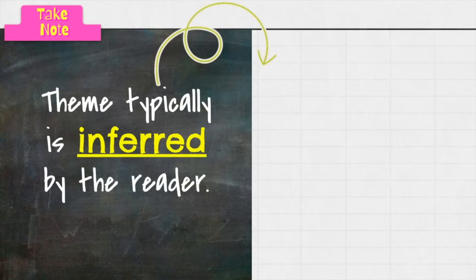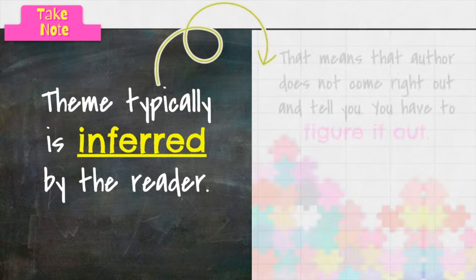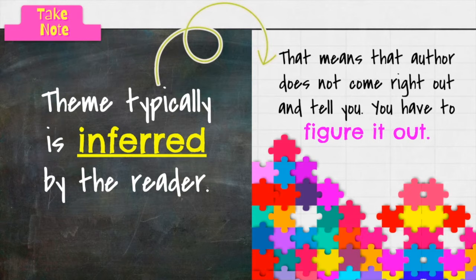So theme is typically inferred by the reader. The author doesn't usually say, hey y'all, this is the theme at the end of the story. No, you have to pick up the clues as you read to figure out the lesson or the message or the unifying idea. So the author doesn't come right out and tell you, you have to figure it out.